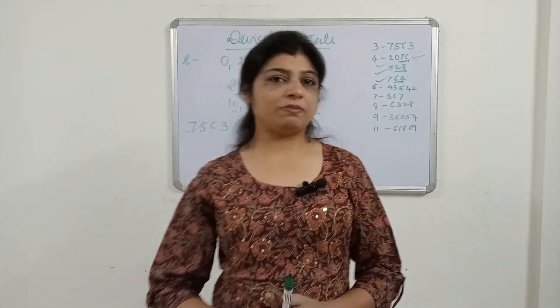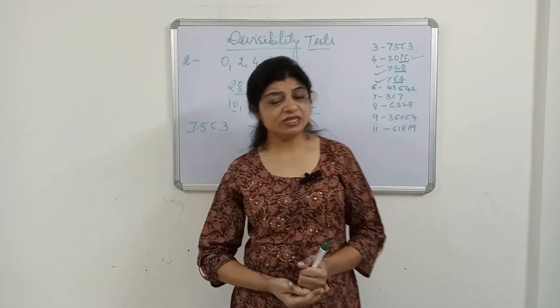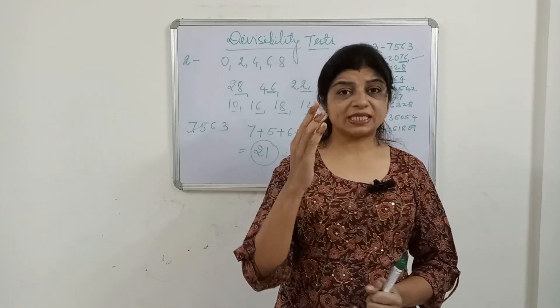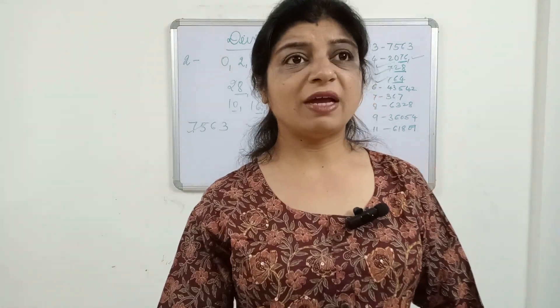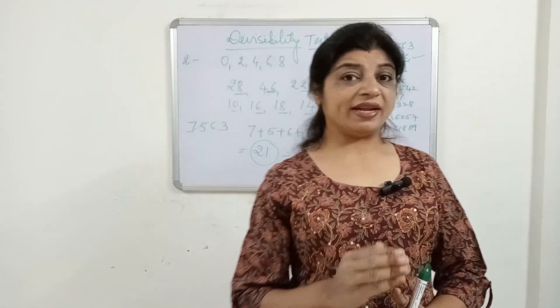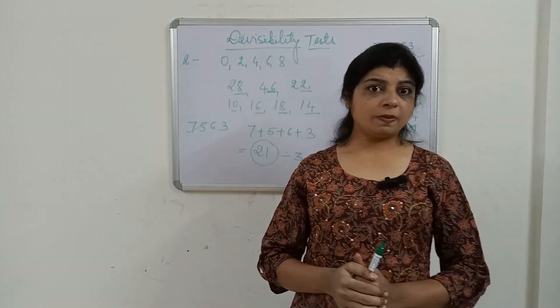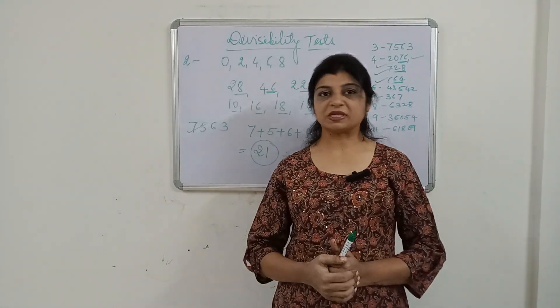Divisibility of 5: it states that a number is divisible by 5 then and then only when at the ones place either 0 or 5 is present.